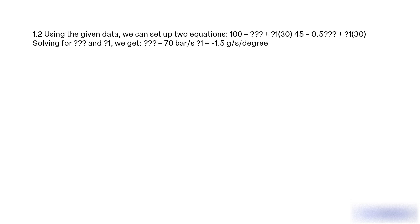1.2 Using the given data, we can set up two equations. 100 equals [gamma] plus [gamma I] of 30. 45 equals 0.5 [gamma] plus [gamma I] of 30. Solving for [gamma] and [gamma 1], we get [gamma] equal to 70 bar per second, [gamma 1] equal to minus 1.5 grams per second per degree.